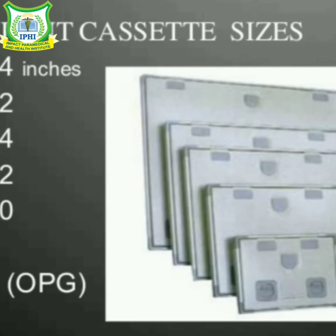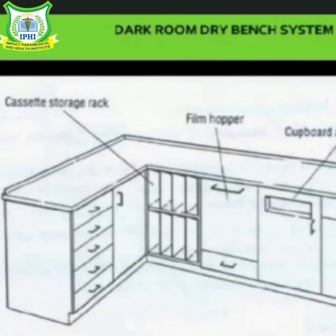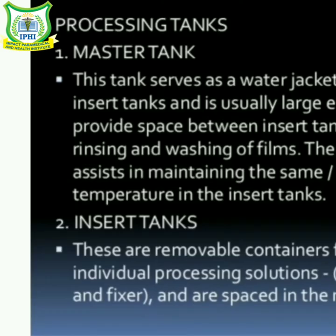On the wet bench, the processing of the film is carried out. The processing includes four steps: developing, fixing, rinsing, and drying. The usual method is to use a set of tanks holding developer, rinse water, and fixer, and a large tank for washing the films. The processing tanks are the master tank and insert tank.